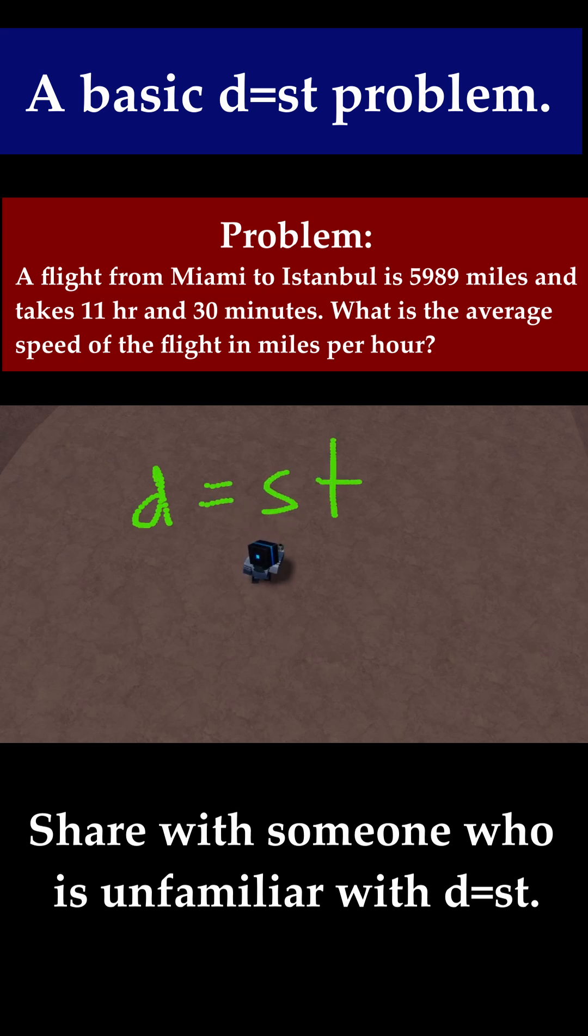Now let's just plug in the numbers we need. So the distance we travel is 5,989 miles. And then the speed, that's our unknown.